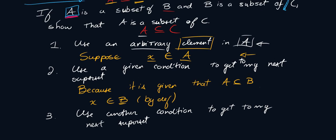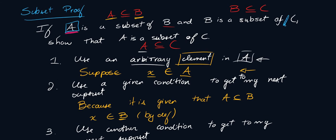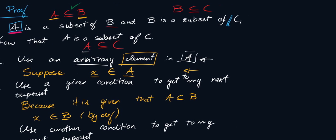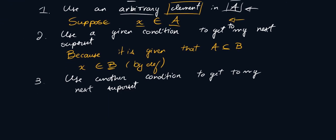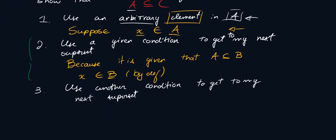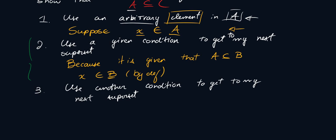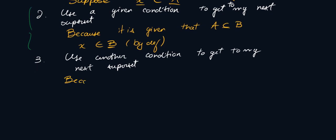In other words, what I mean by that is I've already used this, which was given. So the only thing that's left is to use this assumption. So how will I use this assumption? Well, the same way that I used it in two. So I say that because B is a subset of C by assumption, then X must also belong to C.